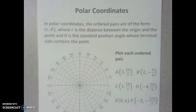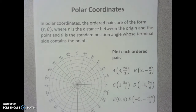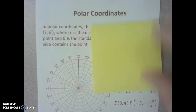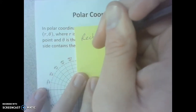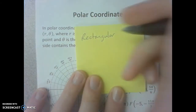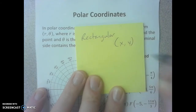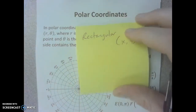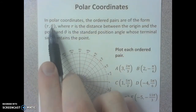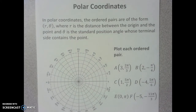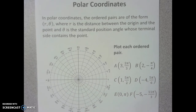On page 63 today we're talking about polar coordinates, which is a different coordinate system than the one you're used to. It's not the same as what we call rectangular. Rectangular coordinates are what you've been graphing since probably middle school, where your ordered pairs are (x, y). But today we're going to graph polar coordinates, where the ordered pairs are of the form (r, θ). R is the distance between the origin and the point, and θ is the standard position angle whose terminal side contains the point.